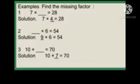The next example is: blank into 6 equals 54. So which number do you have to multiply by 6 to get the product 54? We will read the table of 6 until we get the product: 6 ones are 6, 6 twos are 12, 6 threes are 18, 6 fours are 24, 6 fives are 30, 6 sixes are 36, 6 sevens are 42, 6 eights are 48.